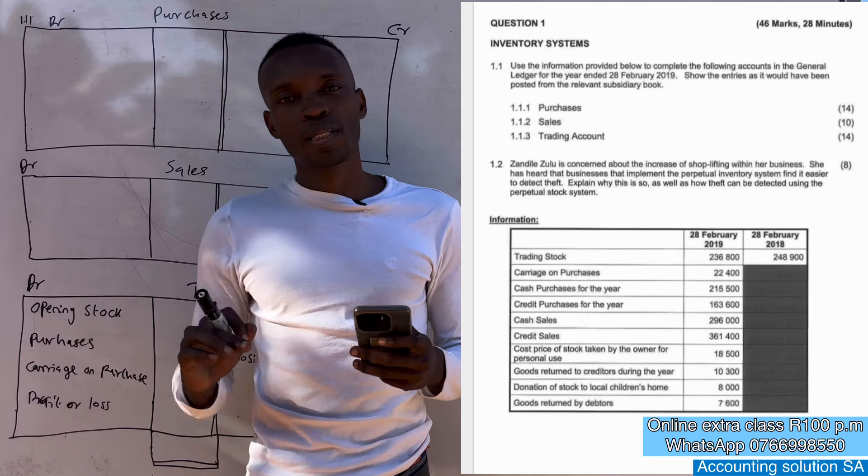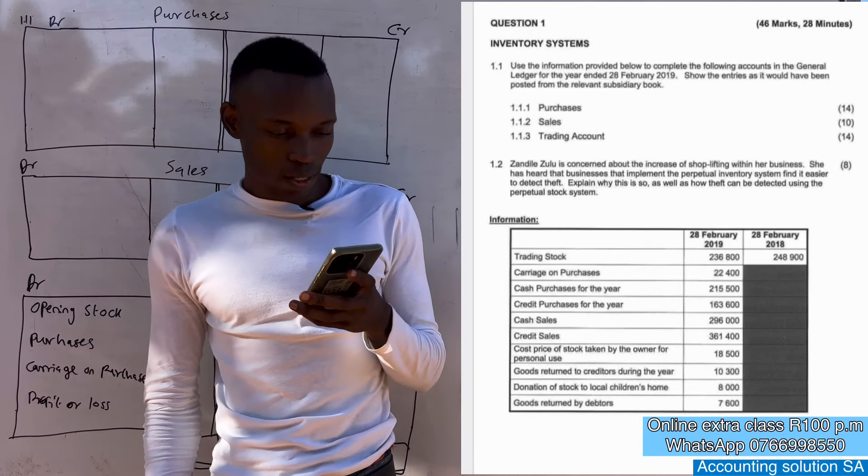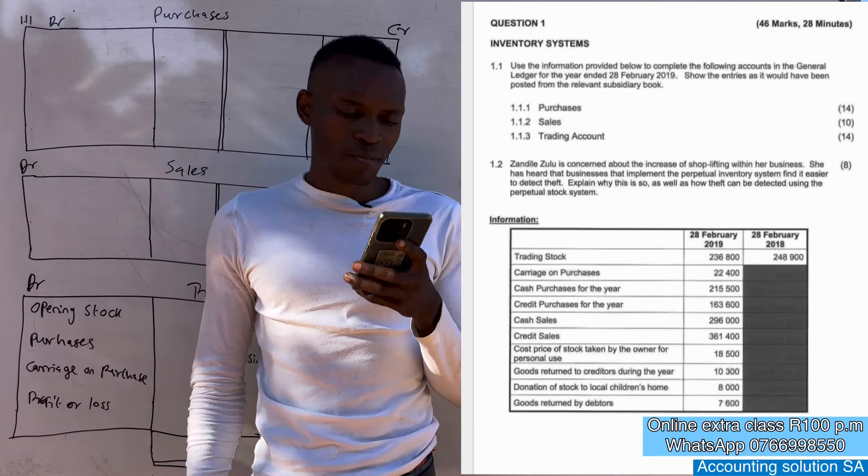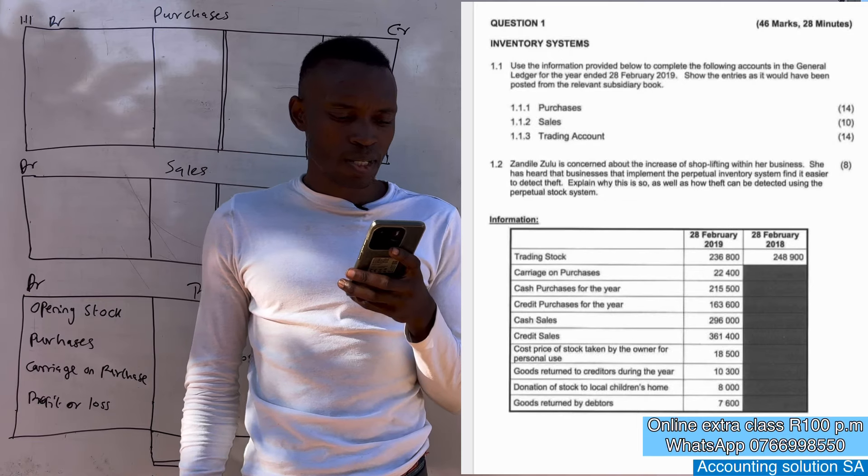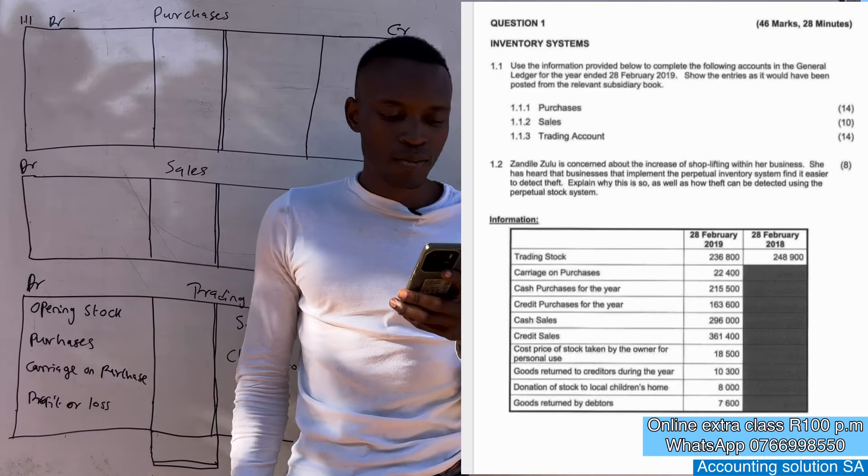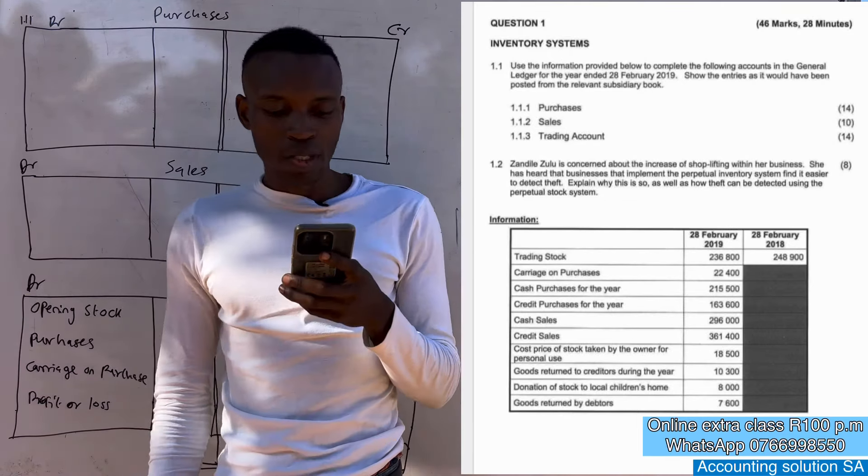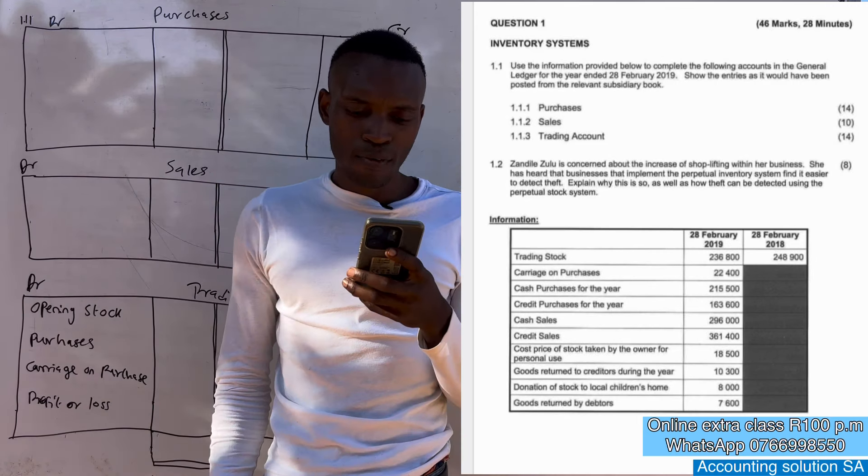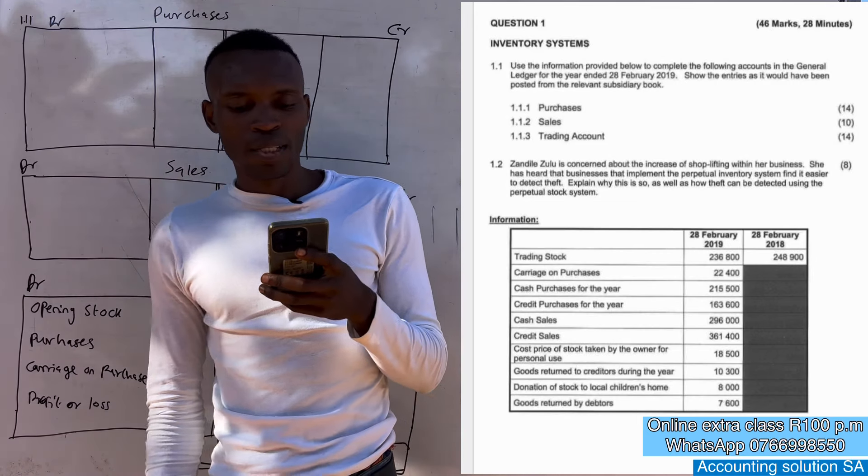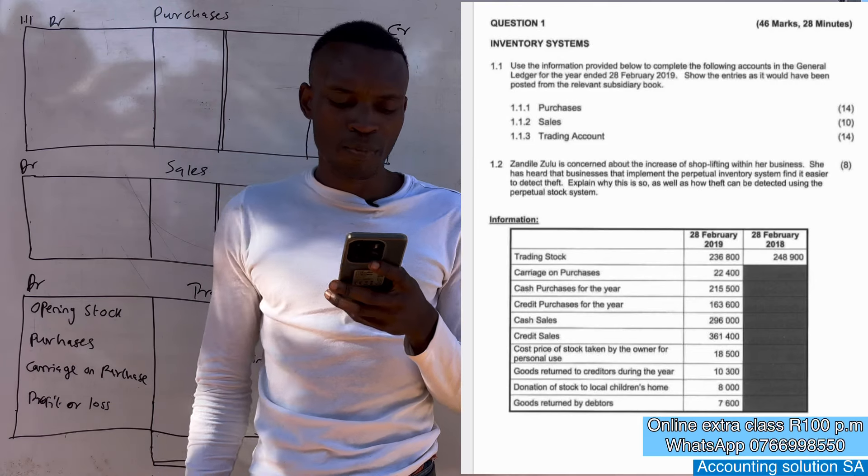1.1 Use the information provided below to complete the following accounts in the general ledger for the year ended 28 February 2019 and show the entries as it will have been posted from the relevant subsidiary books.